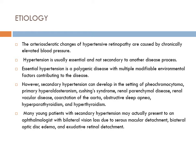However, secondary hypertension can develop in the setting of pheochromocytoma, primary hyperaldosteronism, Cushing's syndrome, renal parenchymal disease, renovascular disease, coarctation of the aorta, obstructive sleep apnea, hyperparathyroidism, and hyperthyroidism. These are causes of secondary hypertension which may affect young individuals.